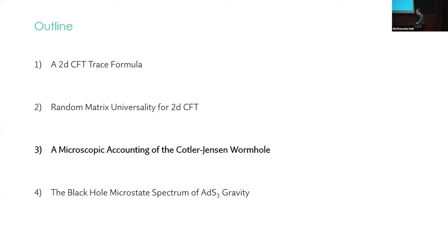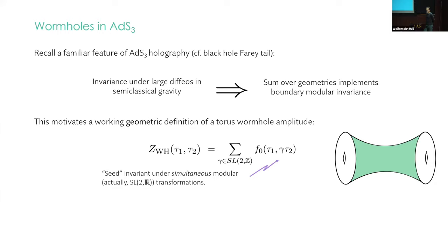Okay. So now we transition to gravity. Now recall a familiar feature of AdS3 holography from the black hole fairy tale, say, which is that the bulk invariant under large diffeomorphisms in the semi-classical theory manifests itself as a sum over geometries, which implements the boundary modular invariance. So with this perspective, we're going to motivate a working geometric definition of a torus wormhole amplitude. We're going to define the wormhole as a sum of this form where the seed is invariant under simultaneous modular transformations with respect to tau one and tau two. And so if we sum over relative transformations, the whole thing will be fully invariant independently with respect to tau one and tau two.